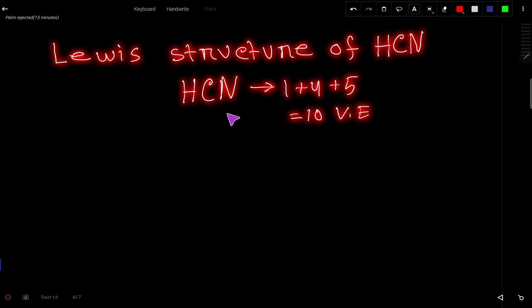These 10 valence electrons have two tasks at the same time. The first task is to connect these three atoms together and the second task is to satisfy the duet for hydrogen and octet for carbon and nitrogen.